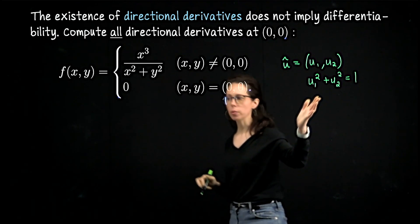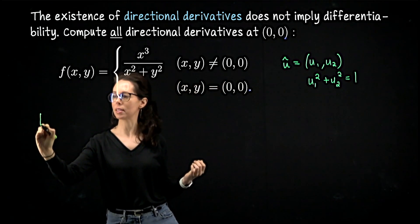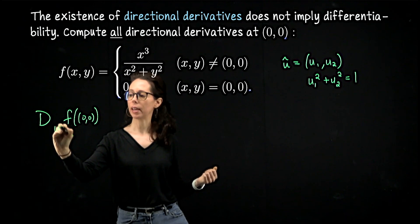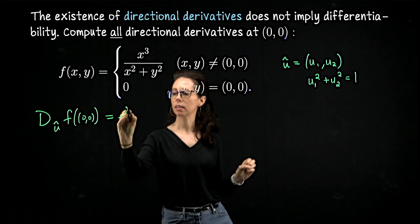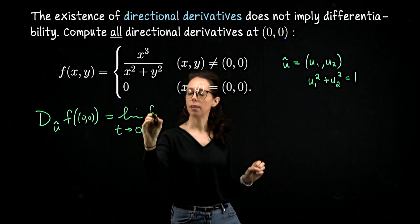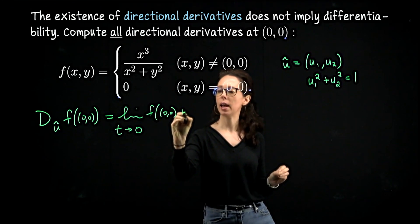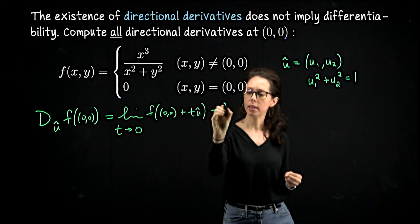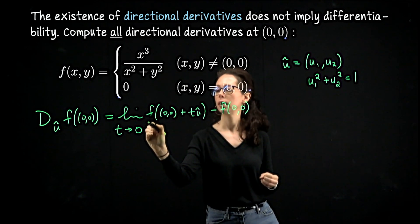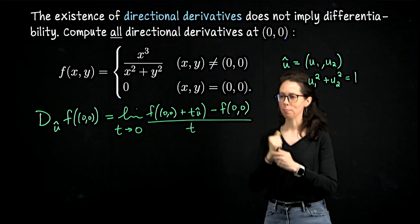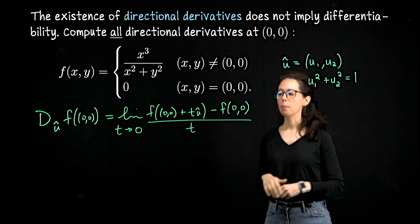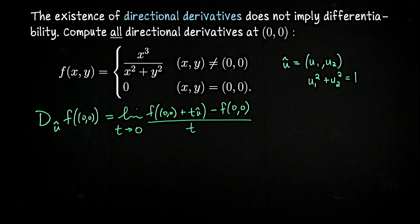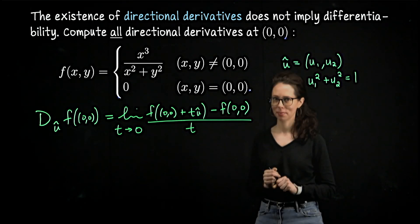The directional derivative of f at the origin in the direction of this unit vector is the limit as t → 0 of f(0+t·u1, 0+t·u2) minus f(0,0), divided by t. That is the difference quotient we need. Take this as far as you can, and then I will come back and we will complete this limit to find every possible directional derivative. All right, let's see how you did.